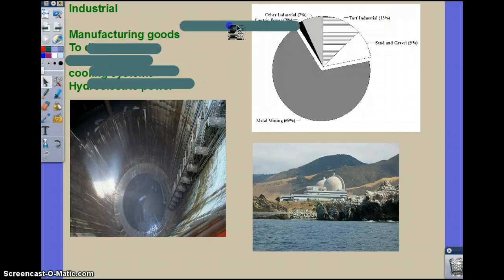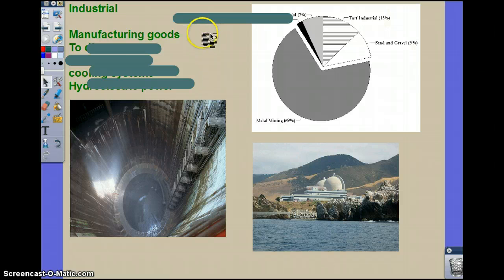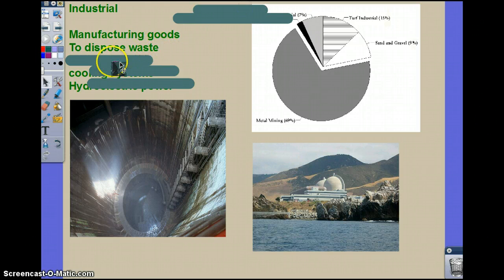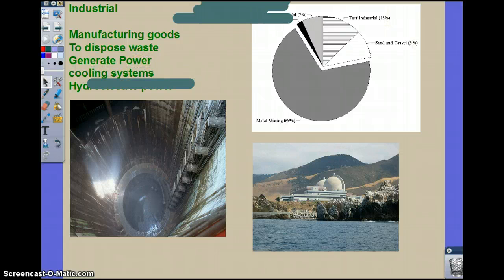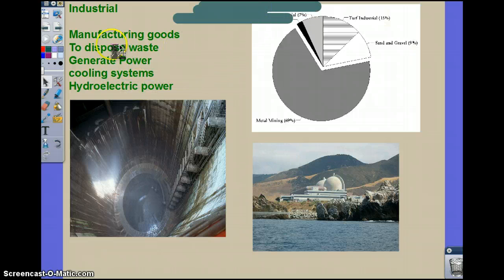In industry, the main use is for manufacturing of goods — basically the making of products. You also have the disposal of waste or the cleaning of these goods. Generation of power is a big use of water, for cooling systems or for running the plant in general. Hydroelectric power plants use water as well.